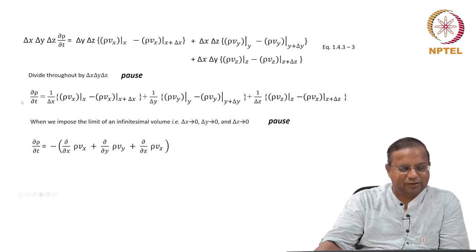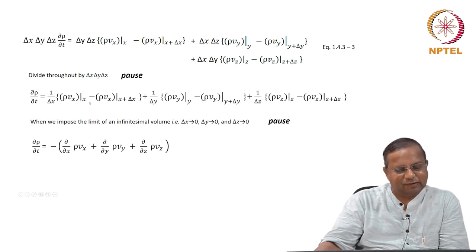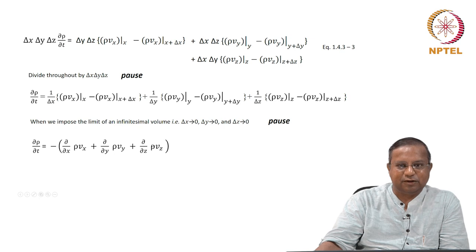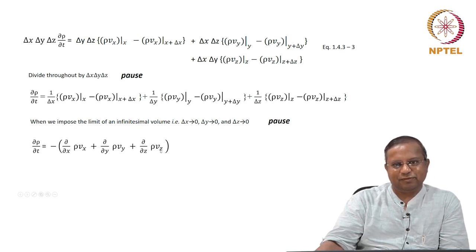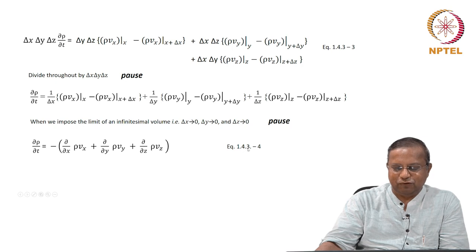Hopefully you got: ∂rho/∂t on this side. In the limit of delta x, delta y, delta z all tending to 0, these become the definition of the partial derivative: ∂/∂x of (rho·vx), ∂/∂y of (rho·vy), and ∂/∂z of (rho·vz). So we have a nice compact expression. We will call this equation 1.4.3-4.